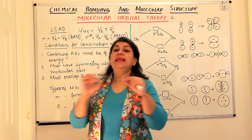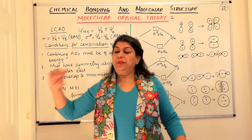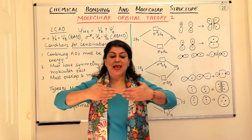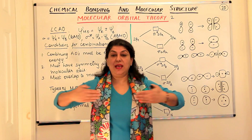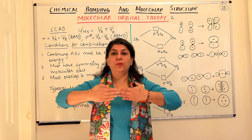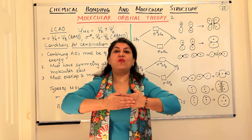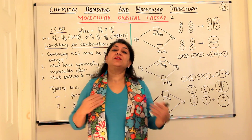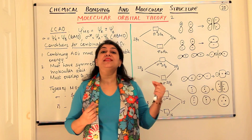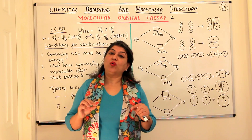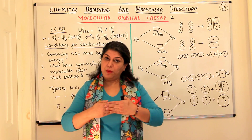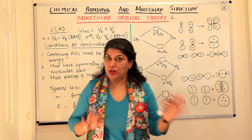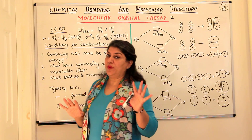Along the z-axis, the pz orbitals are along the internuclear axis—their lobes come head-on, one lobe directly falls over the other, they merge and overlap, resulting in the formation of a sigma bond. When sideways overlap occurs, we have pi bonds. This we have already studied.